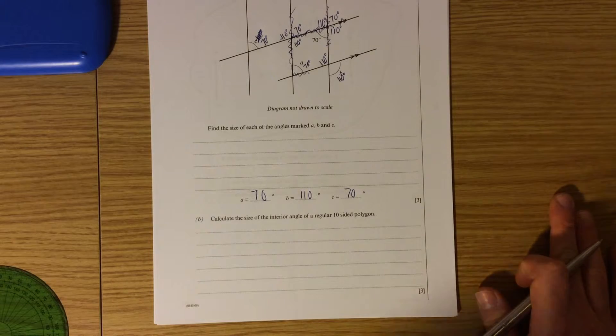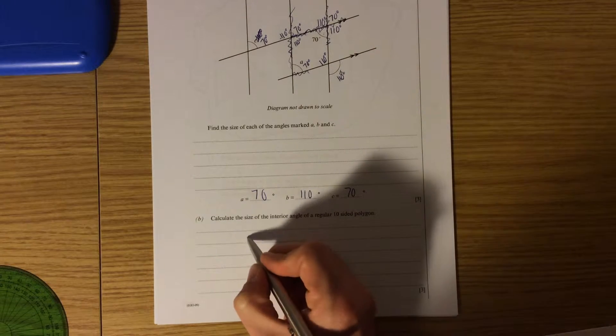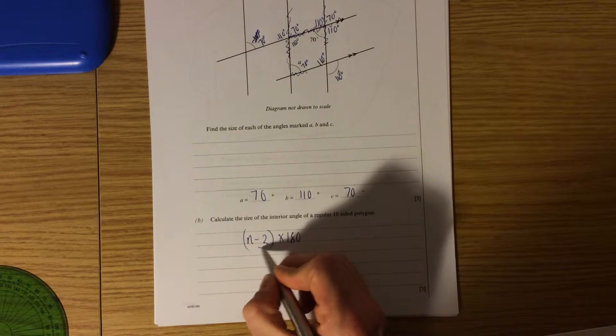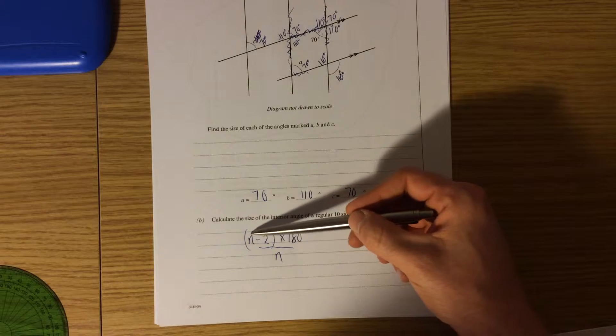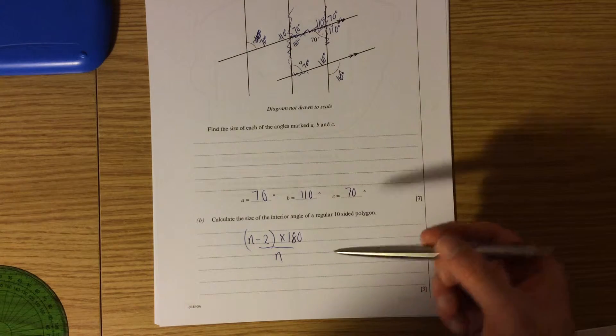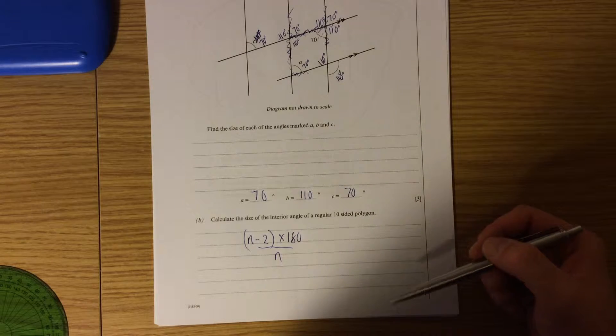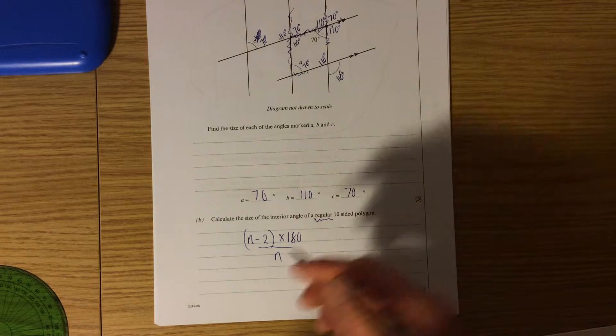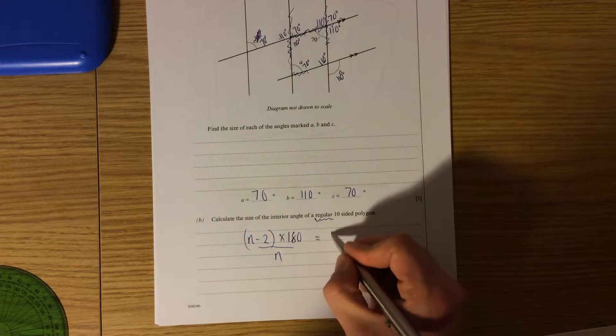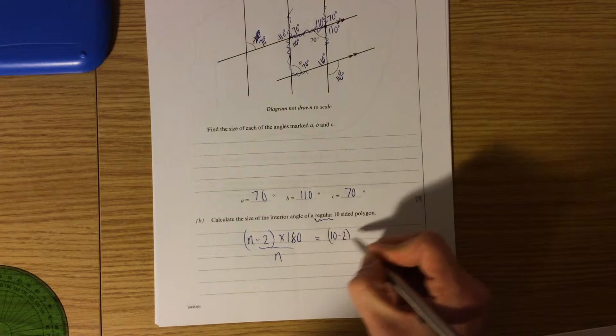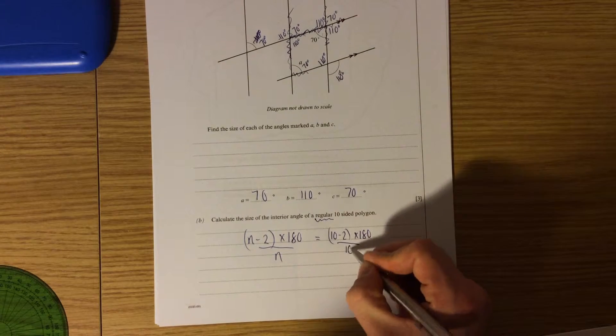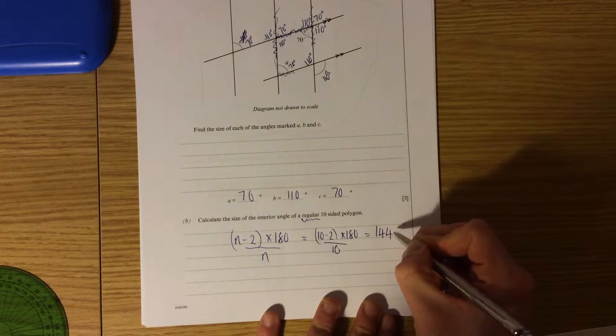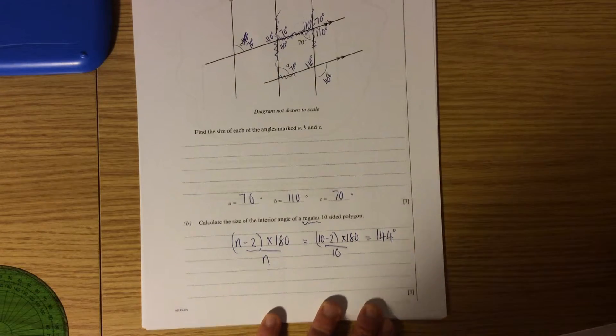Calculate the size of the interior angles of a regular 10 sided polygon. You need to remember the formula: N minus 2 times by 180 divided by N. The top line of this, the N stands for the number of sides, and this top line tells you what the total of all angles inside any polygon add up to. If we have a regular polygon, by dividing by how many sides there are, we will find out what each angle is worth. So this becomes 10 take away 2 times by 180 divided by 10. So this is 8 times 180 which is 1440 divided by 10, which is 144 degrees for each interior angle.